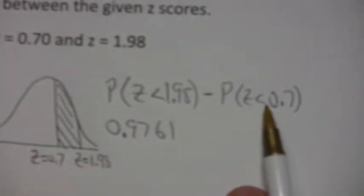And we look up 0.7 in the table. 0.70 is that number there. And that's 0.7580.